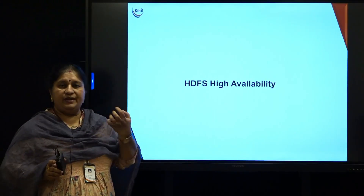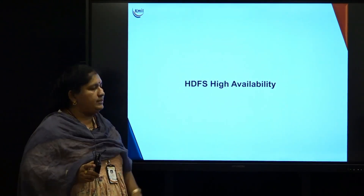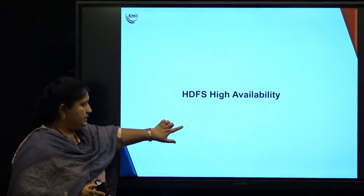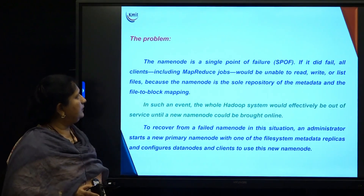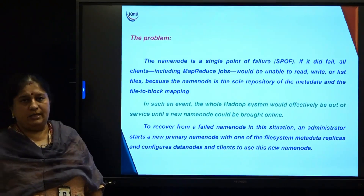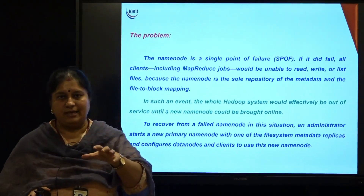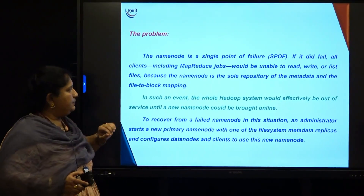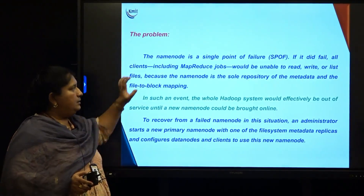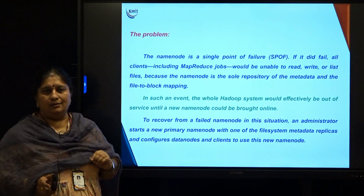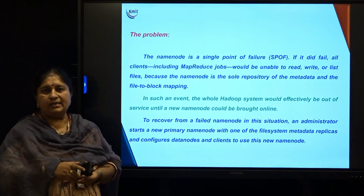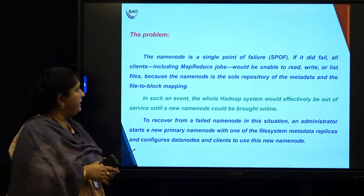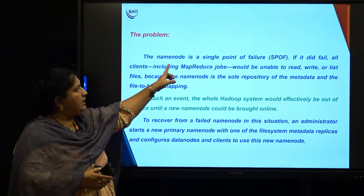HDFS Federation is very helpful for something called HDFS high availability. What do we mean by high availability? Let us look at a problem scenario first. The name node — what if it fails? Entire metadata is kept in the name node. If it fails, how do I access my data? The name node is a single point of failure. If it fails, all clients including processing jobs cannot read the data, cannot write the data, and cannot even list out the files, because the name node holds the metadata about which file is in what location.